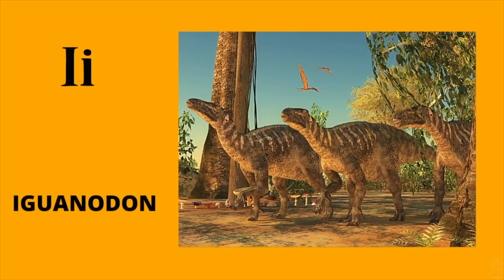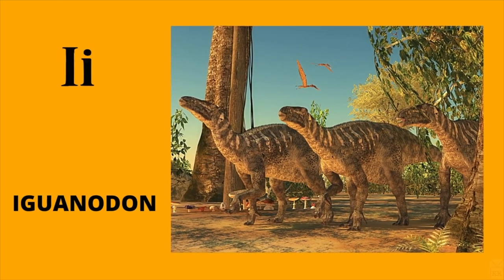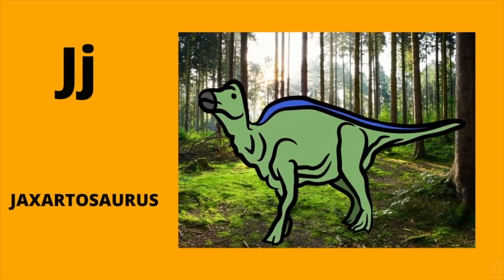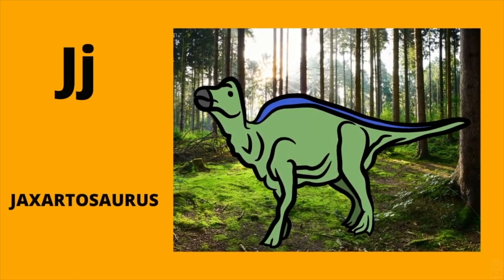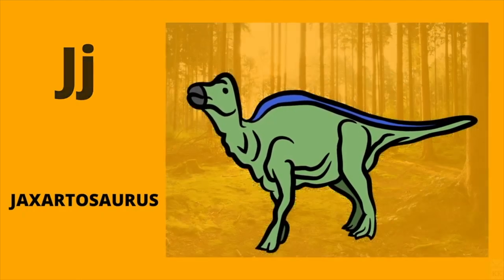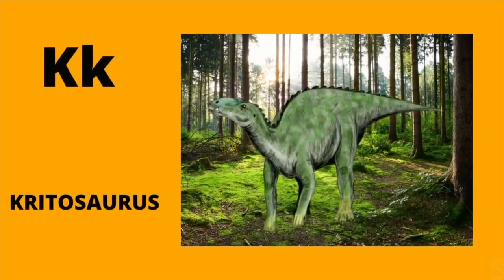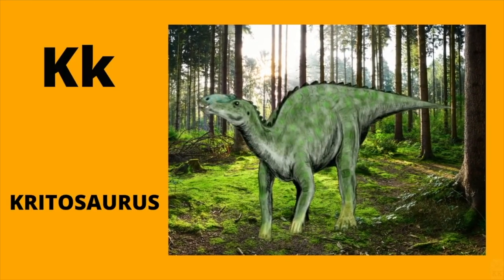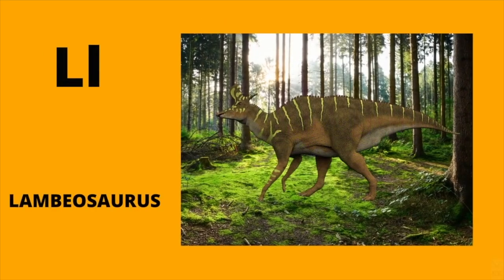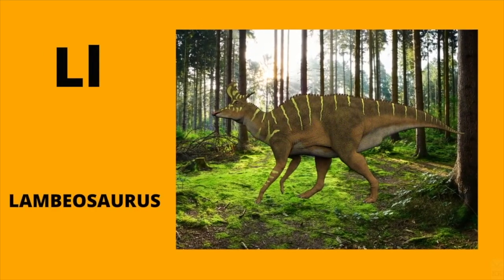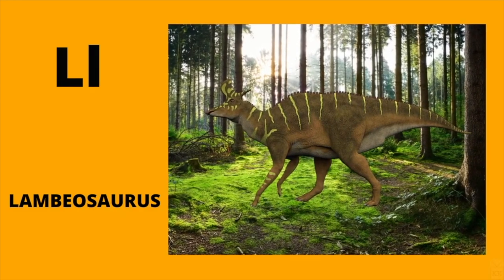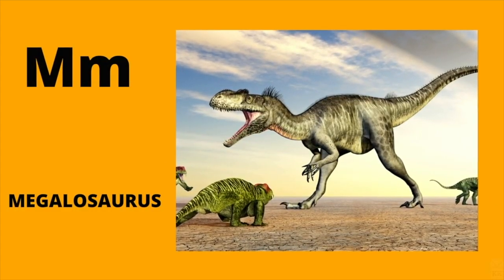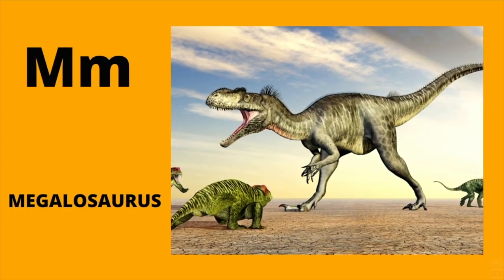I is for Iguanodon. I, Iguanodon. J is for Jaxartosaurus. J, Jaxartosaurus. K is for Kritosaurus. K, Kritosaurus. L is for Lambeosaurus. L, Lambeosaurus. M is for Megalosaurus. Ma, Megalosaurus.